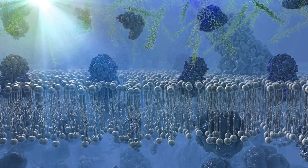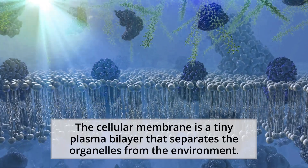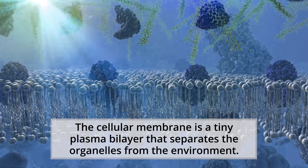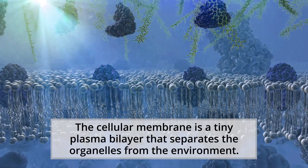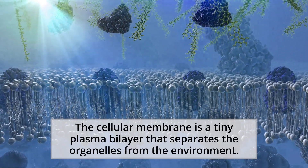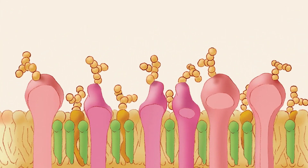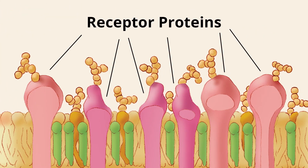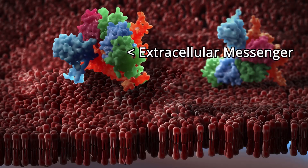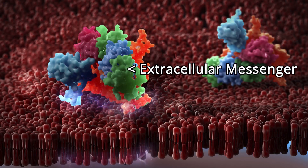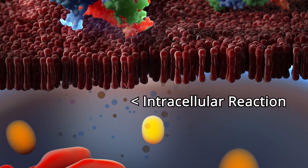The cellular membrane is a tiny plasma bilayer that separates the organelles from the environment. The membrane is covered in hundreds of thousands of little receptor proteins that interpret signals from outside the cell and relay the information back into the nucleus.